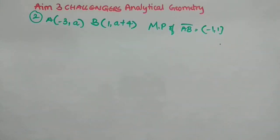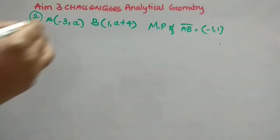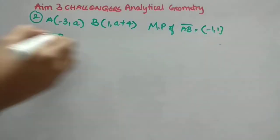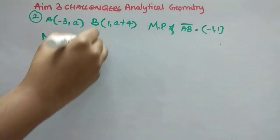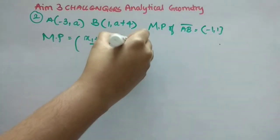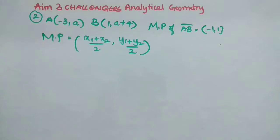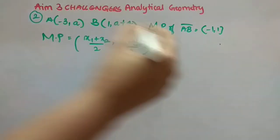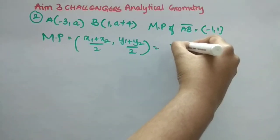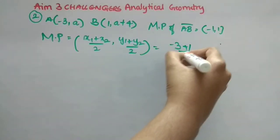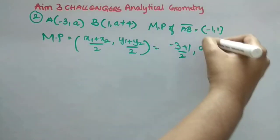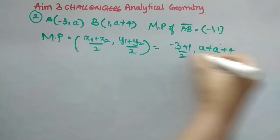Then, midpoint of AB bar, midpoint, so I will write MP, but you should write midpoint of AB bar full form every time, is equal to minus 1 comma 1. So here what we have to find, we have to find the value of A.